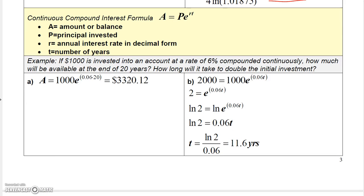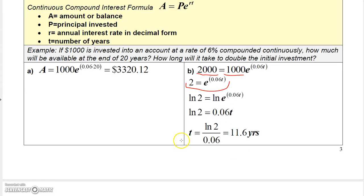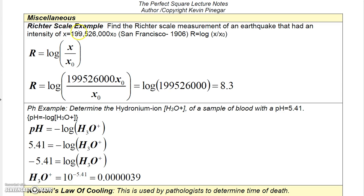For the continuous compounding example, part B asks how long to double $1,000. Set A equal to $2,000, with P equals 1,000 and rate 0.06. Dividing both sides by 1,000 gives 2 equals e to the 0.06t. Take natural logs of both sides: ln(2) equals 0.06t, then divide by 0.06 to get your answer.